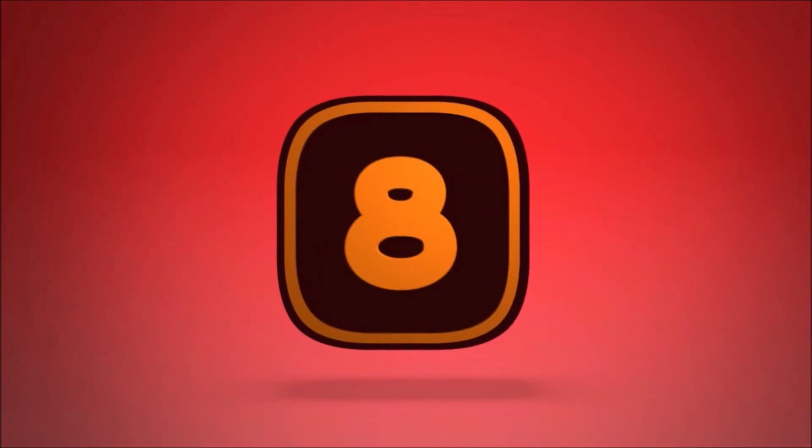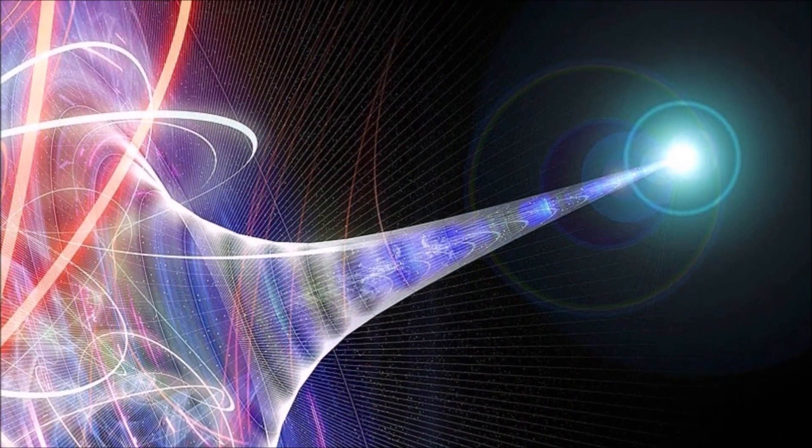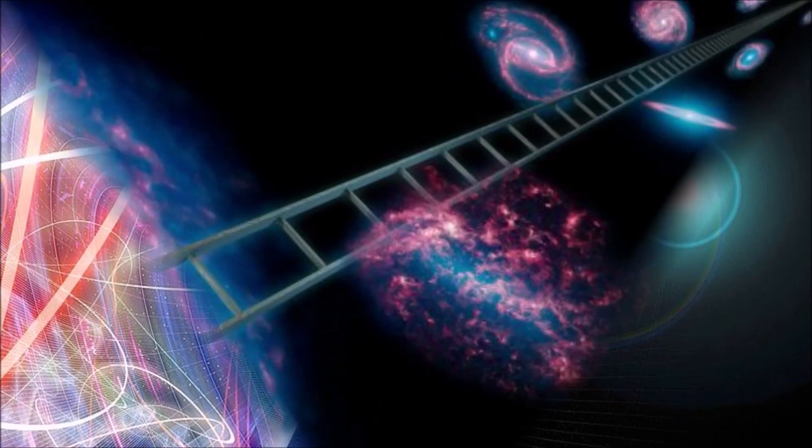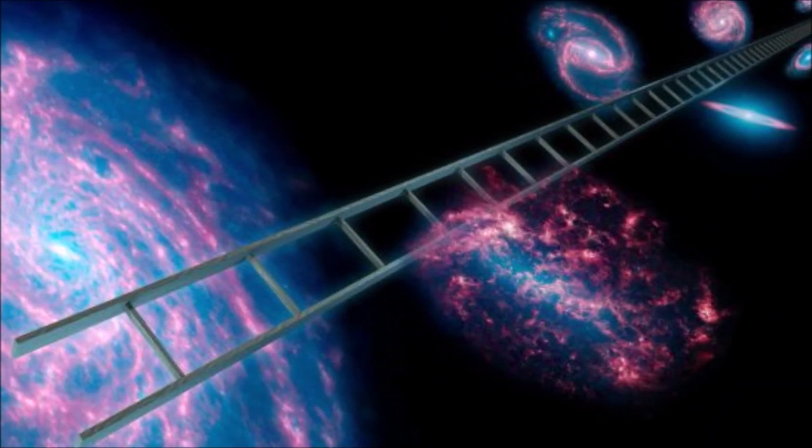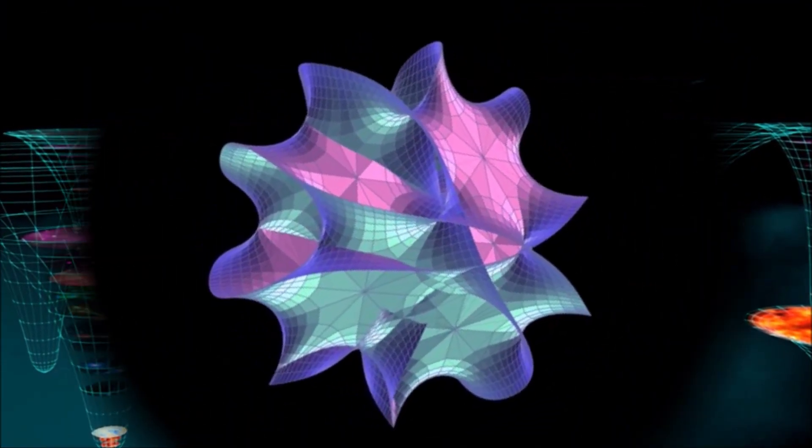Actually, There Are 26. If thinking about 10 dimensions hurts your brain, try imagining a universe in 26 dimensions. According to the Bosonic String Theory, the original version of string theory developed in the late 1960s, there's actually 25 dimensions of space and one of time.